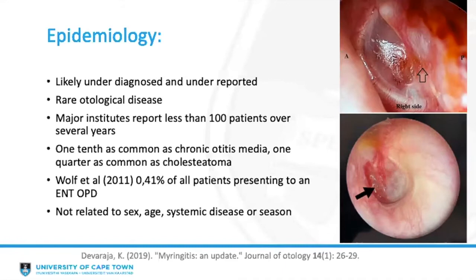Historically, major institutes report fewer than 100 patients over several-year periods, with one paper suggesting it was approximately one-tenth as common as all forms of chronic otitis media and one-quarter that of cholesteatoma. However, later in 2011, Wolf et al. estimated that 0.41% — roughly one in 200 — of all patients in their clinics had some degree of myringitis.